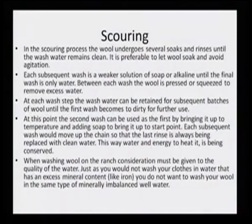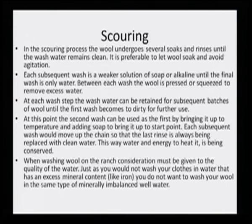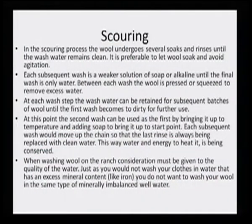In the scouring process, the wool undergoes several soaks and rinses until the wash water remains clean. It is preferable to let wool soak and avoid agitation, in order to avoid entanglement of the wool yarn or skein. It is better to soak it for some time so that all the grease adhering to the yarn may come out. There is no point in agitating because the moment one tries to agitate, the skeins will get entangled and it will be difficult to undo. Between each wash, the wool is pressed or squeezed to remove excess water. Because wool is slightly hydrophobic, it is possible to simply squeeze it, and this process has to be done several times.